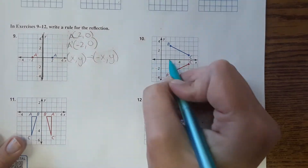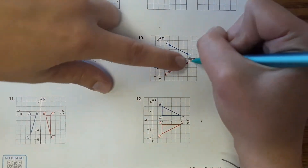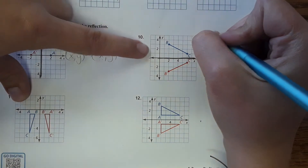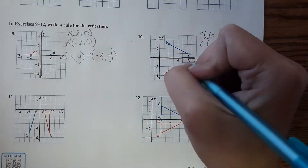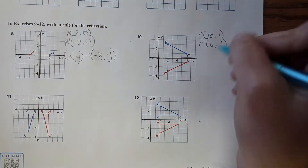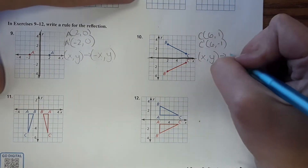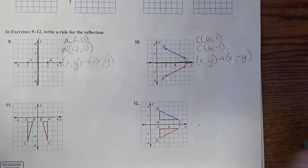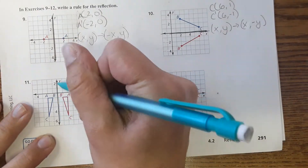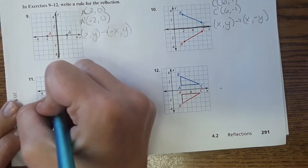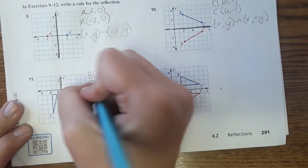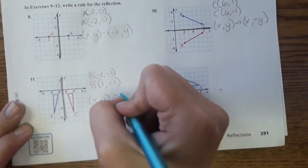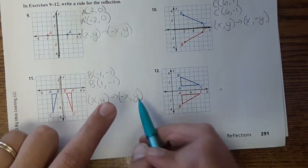For number 10, we are reflecting over the x-axis. I'll choose point C and C prime. C is at (6, 1) and C prime is at (6, -1). The x is staying the same and the y is changing signs. So my rule is (x, y) becomes (x, -y). For number 11, reflecting over the y-axis — point B is at (-1, -1) and B prime is at (1, -1). So (x, y) becomes (-x, y) — x is changing signs, y stays the same.